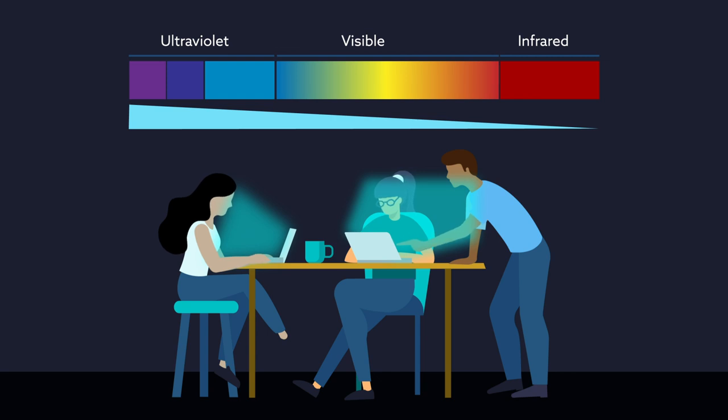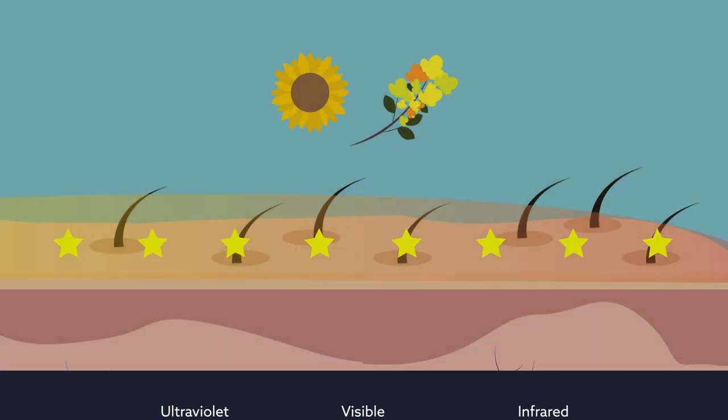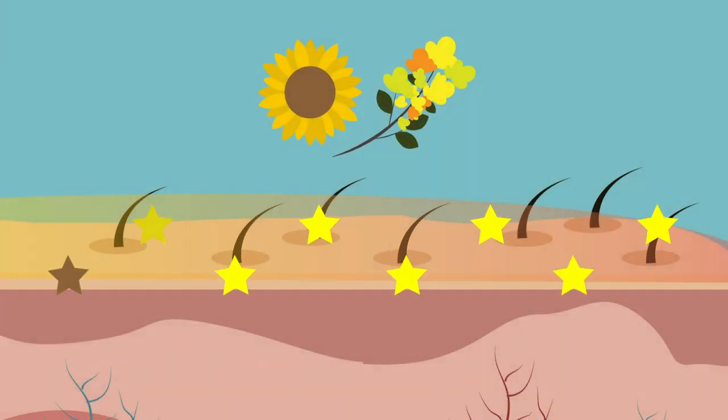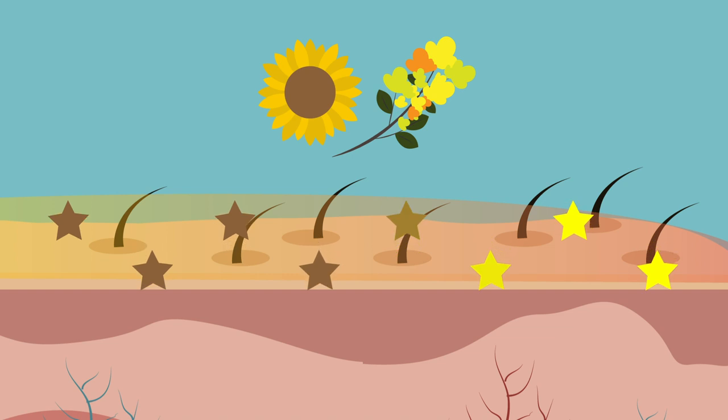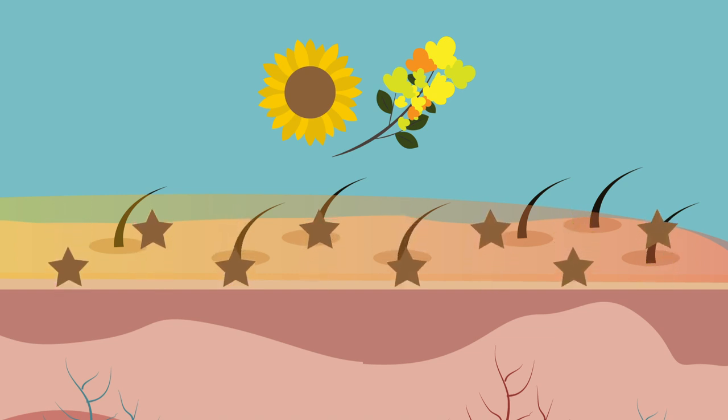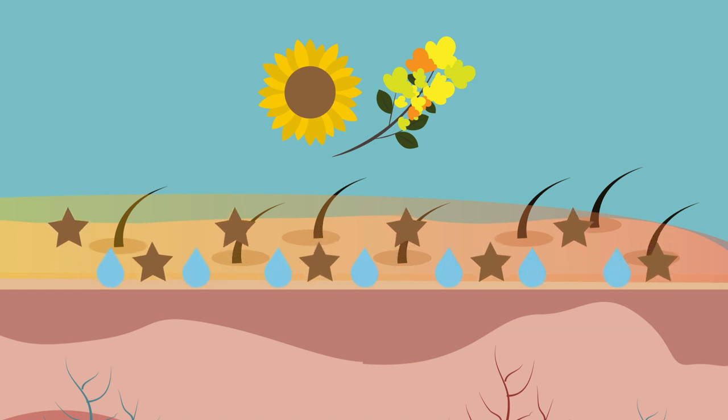Tara tannins and sunflower extract help neutralize free radicals created by infrared light found opposite UV rays on the solar spectrum. And a mix of hyaluronic acid and other moisturizing ingredients helps hydrate the skin.